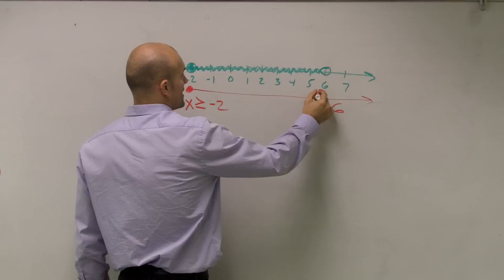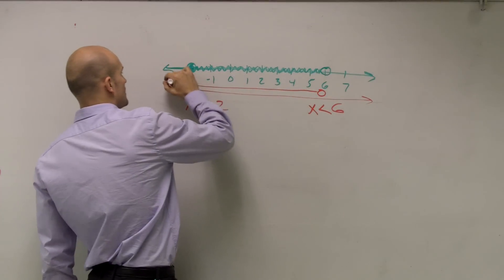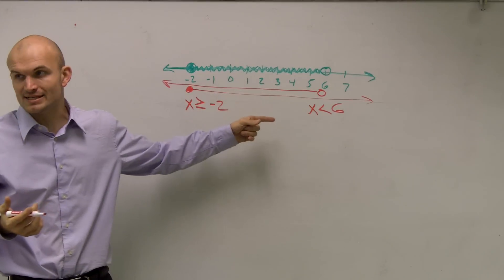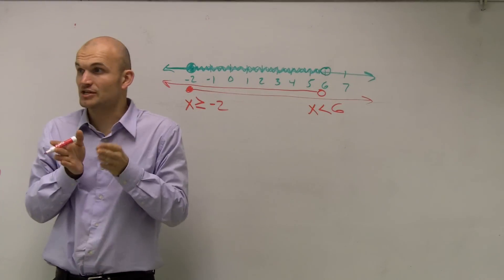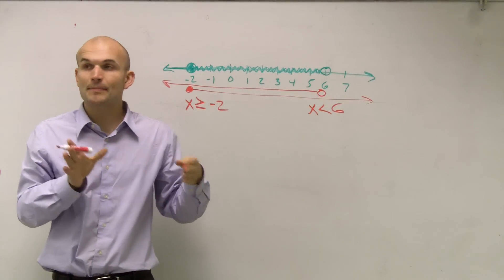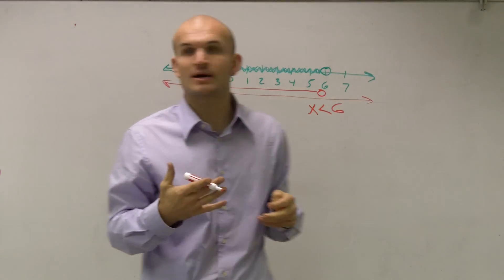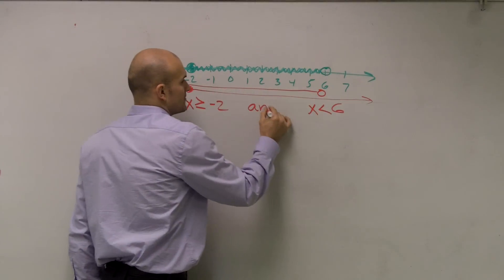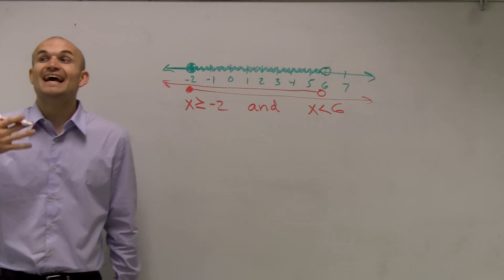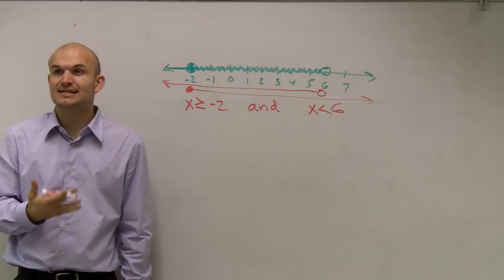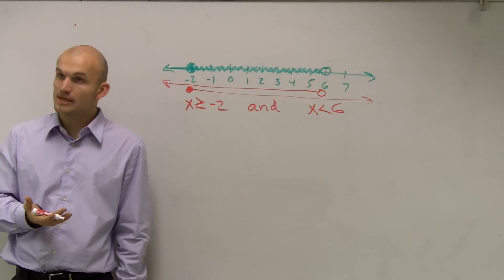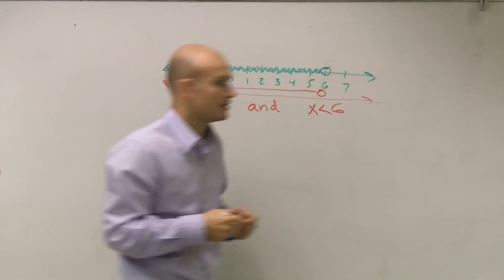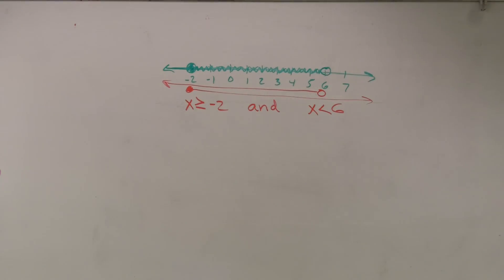That looks like an open dot going all that way. However, our graph is not these two graphs combined — it's the intersection of these two graphs. So to represent the intersection, we use the word 'and.' So I'm going to say x is greater than or equal to negative 2 and x is less than 6. When we're dealing with intersection, you're going to be dealing with 'and.' That's how you find an inequality from a graph.